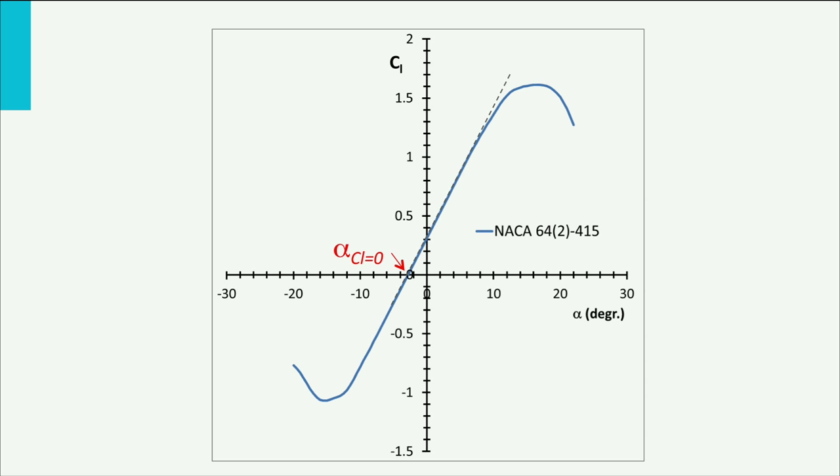Let's take a closer look at the lift curve. In the range of small angles of attack, the boundary layer remains attached to the surface and the lift coefficient changes linearly with the angle of attack. The slope of the lift curve is called the lift gradient.